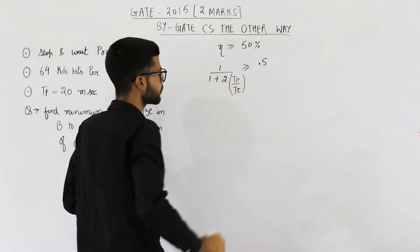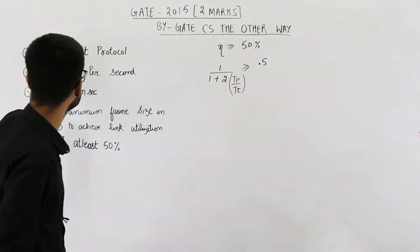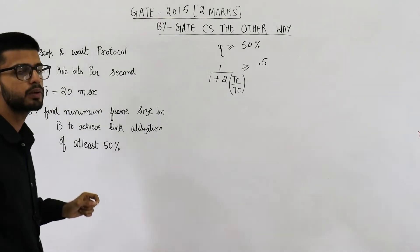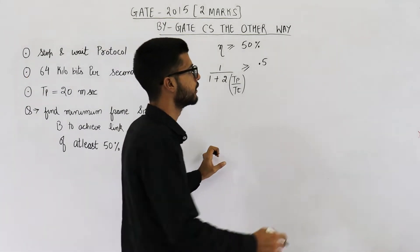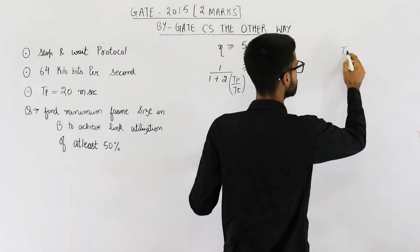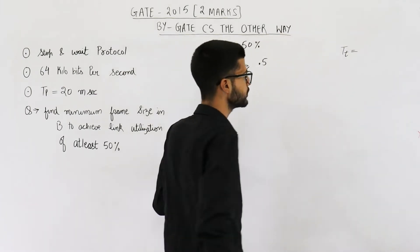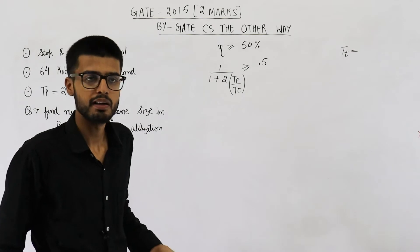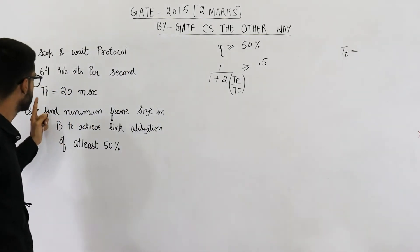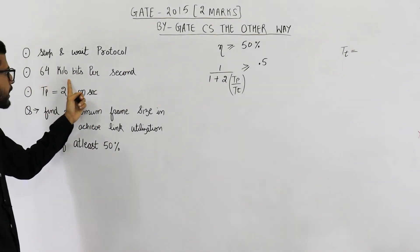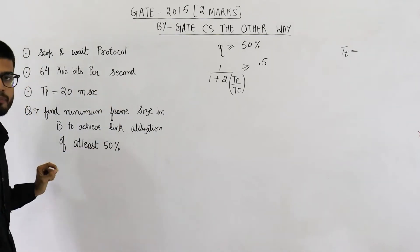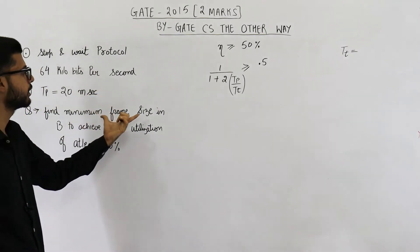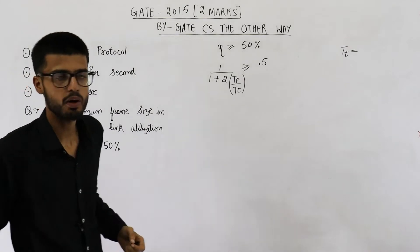Propagation delay is given in the question. But we need to determine transmission delay. So Tt or the transmission delay is L by B. Length of packet or length of frame divided by the bandwidth. Bandwidth is given as 64 kbps but length of packet is not given. We actually need to determine the length of packet or frame.